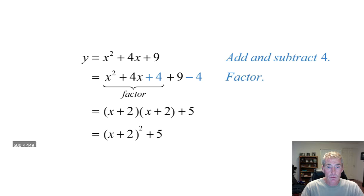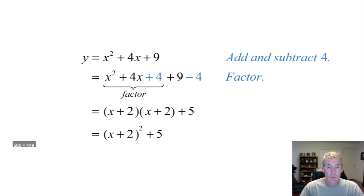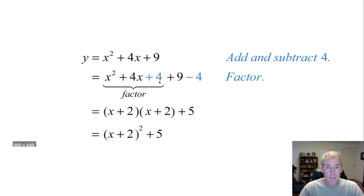Hopefully you remember from pre-calculus how to complete the square. Take the 9 and move it over. The b in front of x is 4 — cut it in half to get 2, square it to get 4. Add 4 and subtract 4, or add 4 to both sides. These three terms factor into a perfect square. For this one the vertex would be at negative 2 comma 5 — when it's in the parentheses you use the opposite of that number.